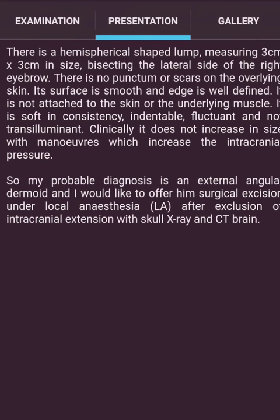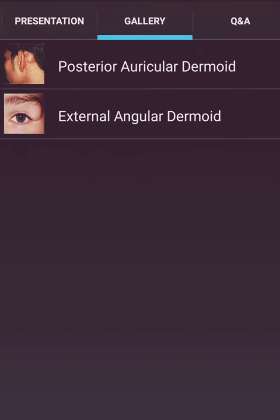Presentation: There is a hemispherical separate lump measuring 3 cm in size, bisecting the lateral side of the right eyebrow. There is no punctum or scars on the overlying skin. Its surface is smooth and edge is well defined. It is not attached to the skin or the underlying muscle. It is soft in consistency, indentable, fluctuant and not transilluminant. Clinically, it does not increase in size with manoeuvres which increase intracranial pressure. My probable diagnosis is an external angular dermoid, and I would like to offer surgical excision under local anesthesia after exclusion of intracranial extension with skull X-ray and CT brain.